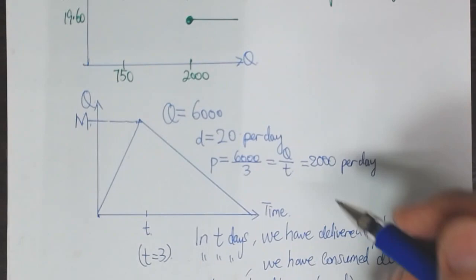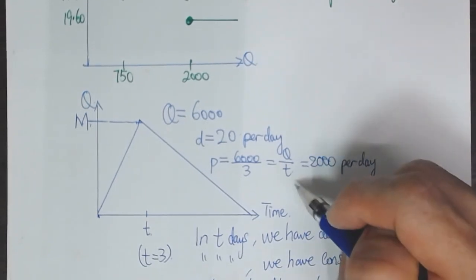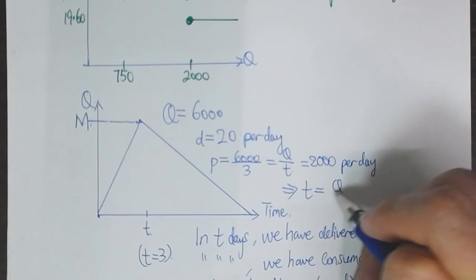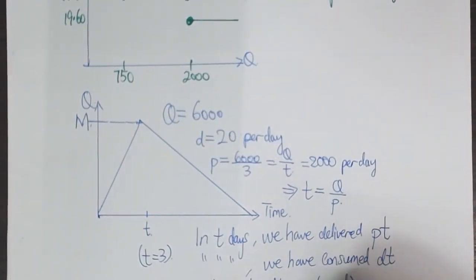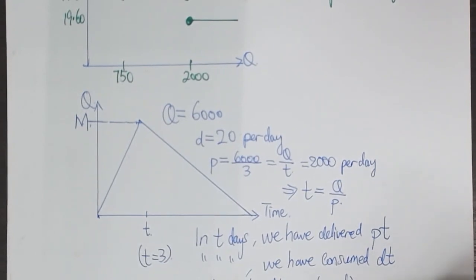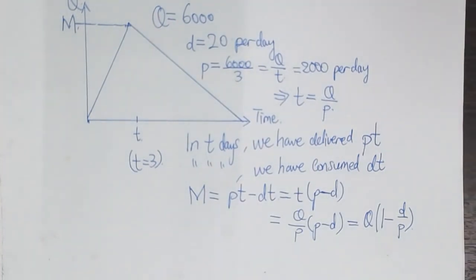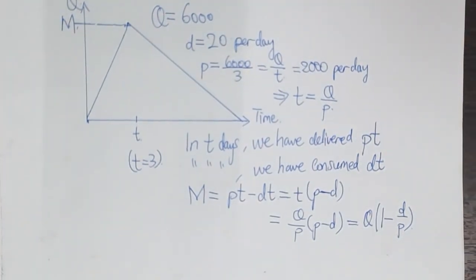We have the relationship T equals Q over p, so we can write this as Q over p times (p - d). We can factor this to obtain Q times (1 - d/p). Notice that this ratio is daily demand over daily production rate, which is sometimes more convenient in solving problems than annual demand divided by annual production rate, although the ratio is the same because we're assuming everything is constant.